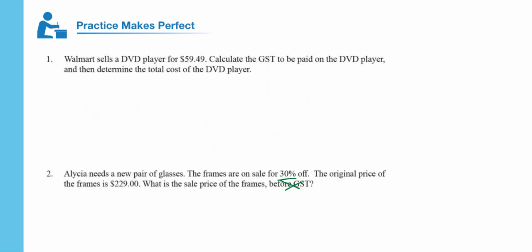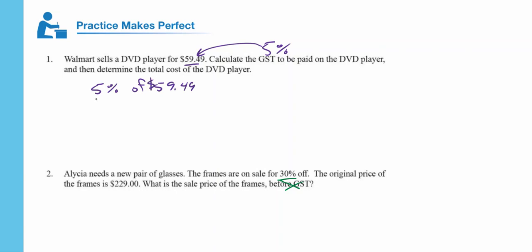Walmart sells a DVD player for $59.49. The question asks us to calculate the GST on the DVD player and then determine the total cost — not that anyone really has DVD players anymore. So if that's our price, we need to figure out the GST, which in Alberta is five percent. We need to find out what five percent of $59.49 is.